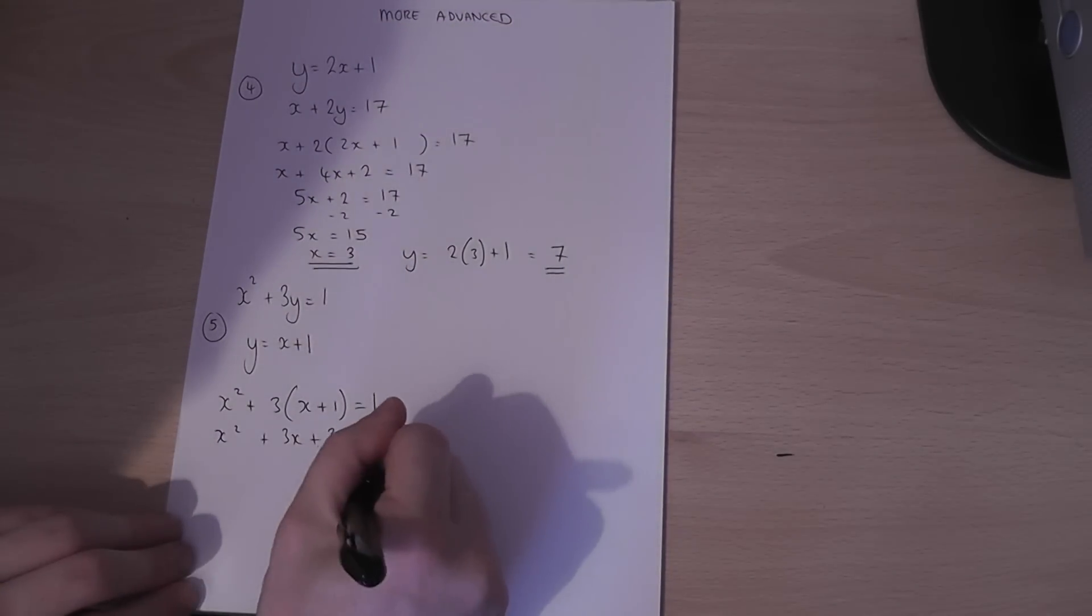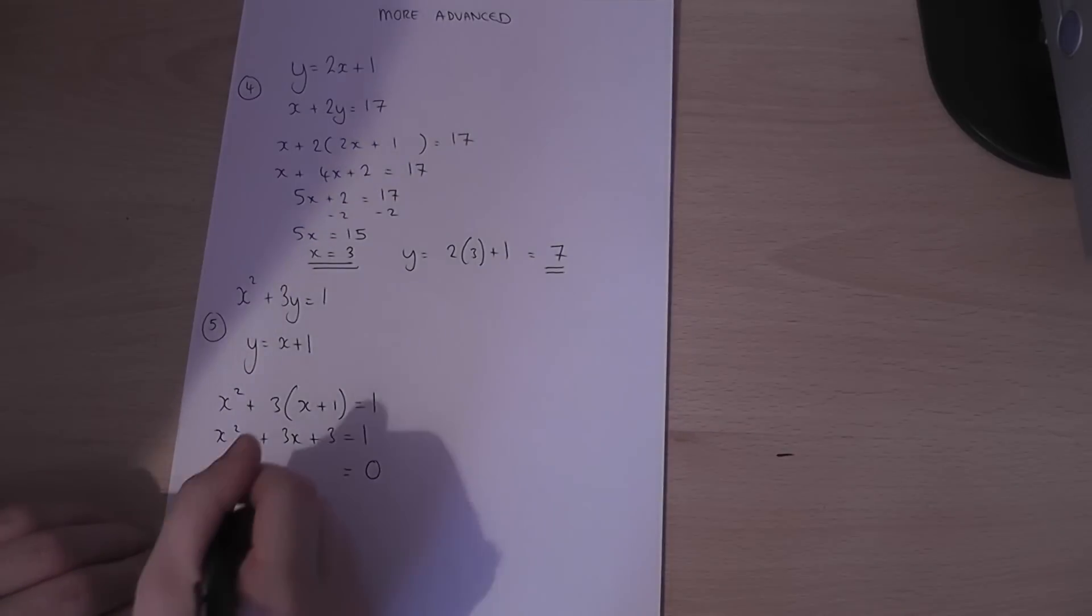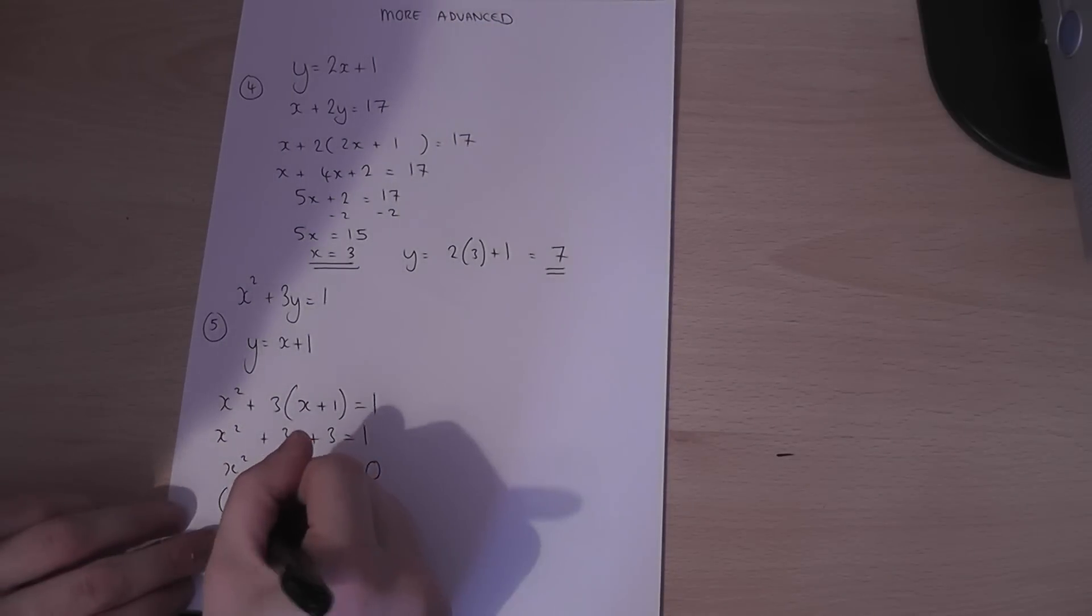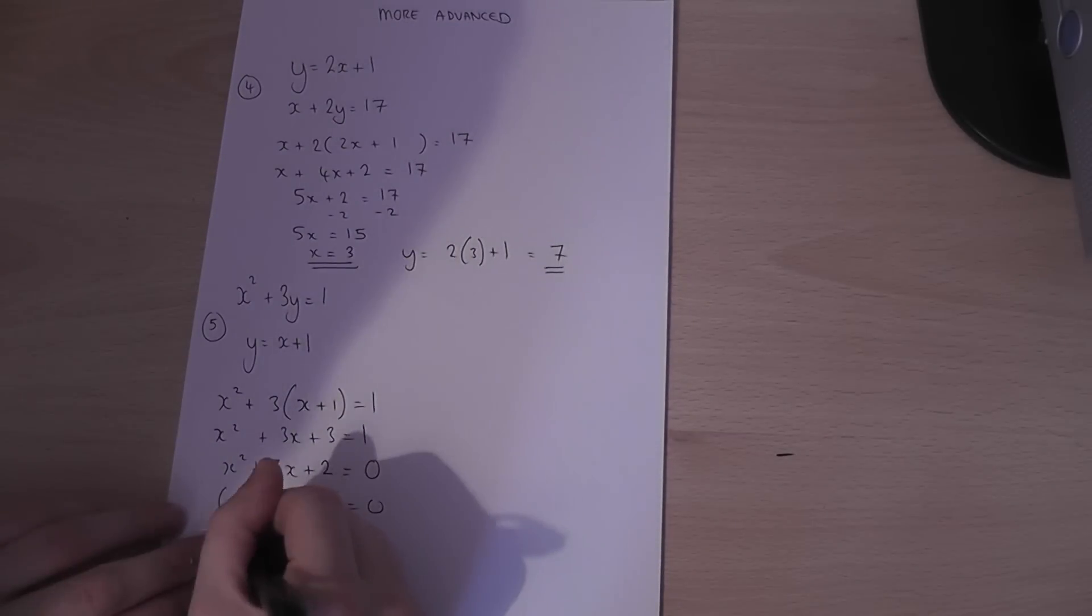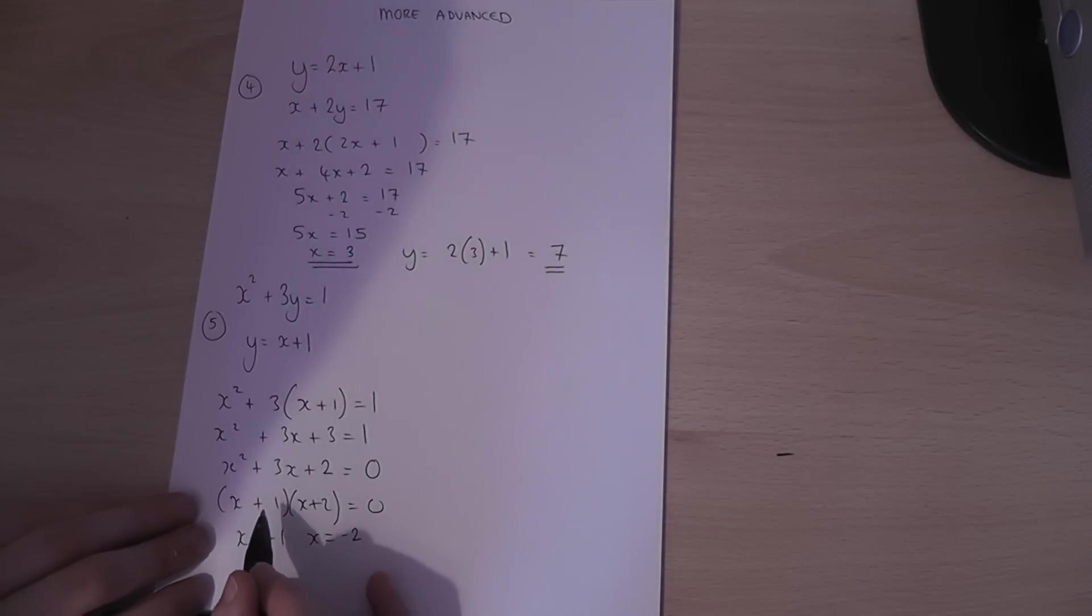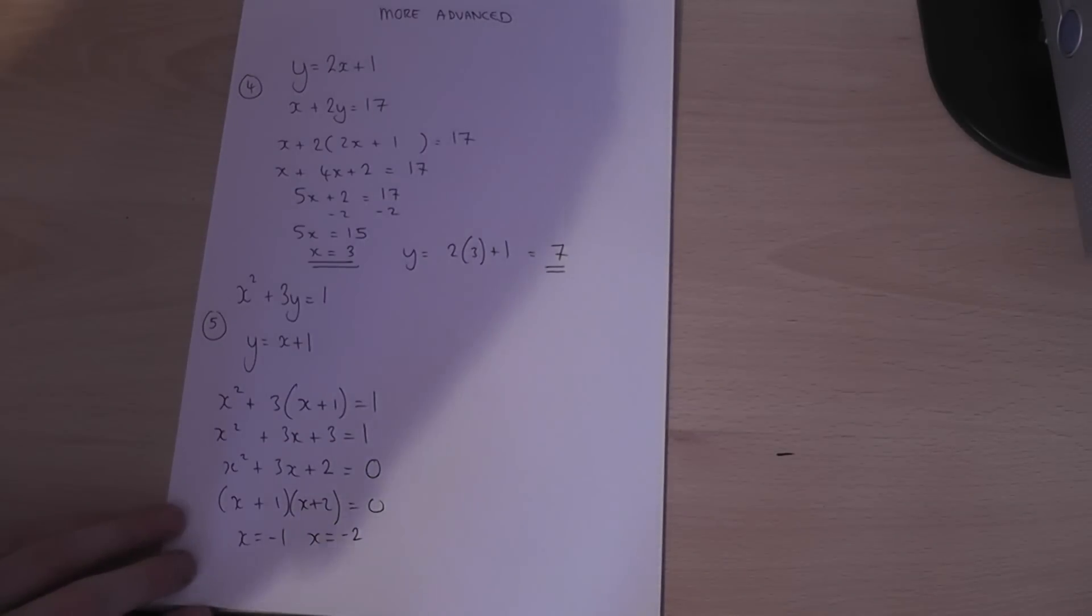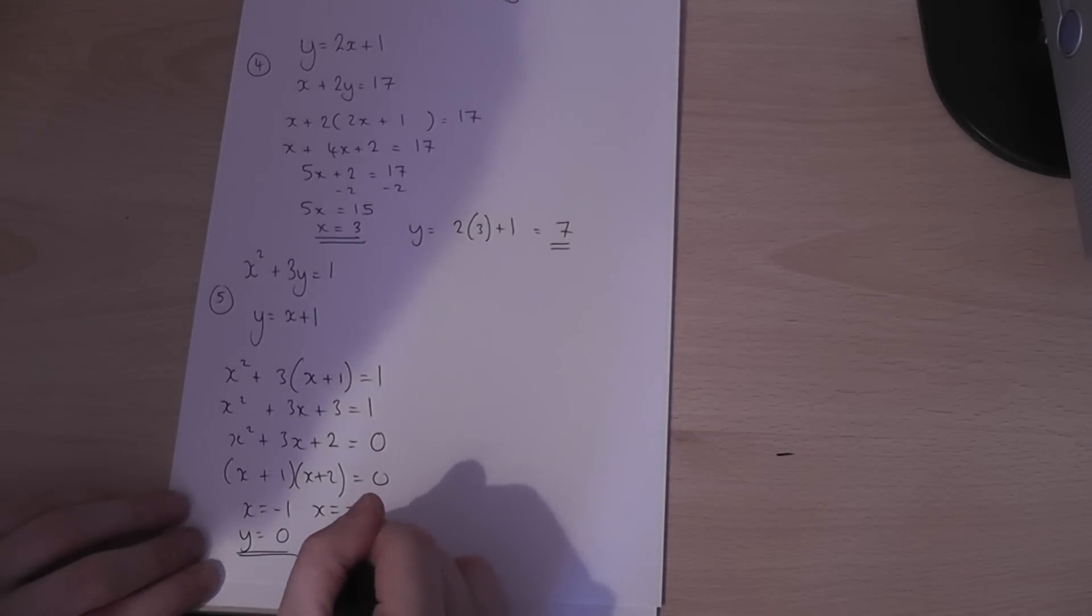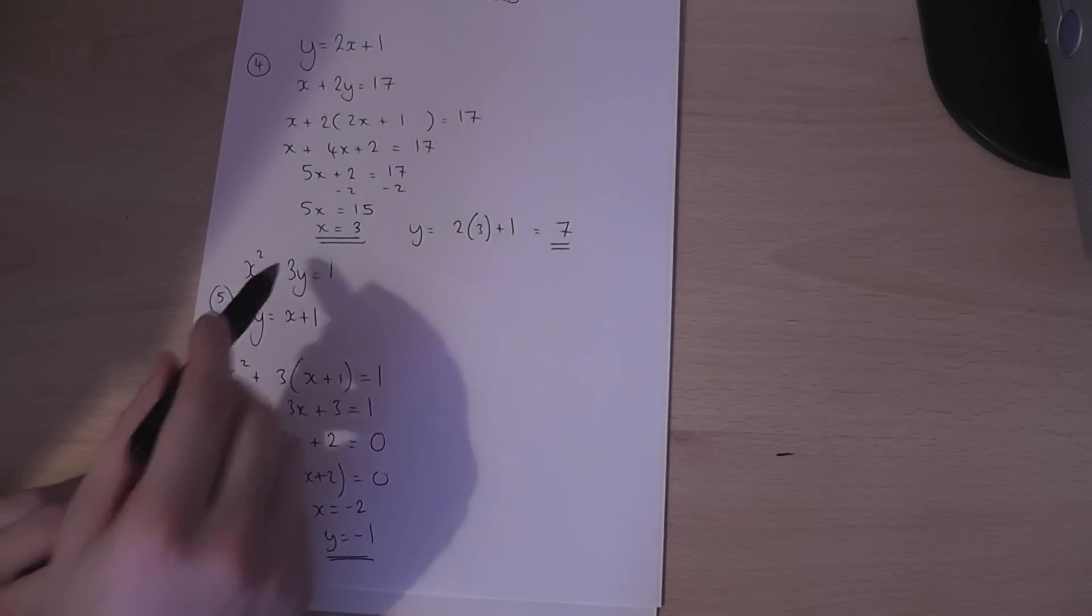And then because it's quadratic I want to make the equation equal to 0. So I subtract 1 from both sides. This equation factorizes. Because 1 times 2 is 2 and 1 plus 2 is 3. Therefore the solutions must be x equals minus 1 and x equals minus 2. Because if you factorize the solutions, the solutions are the numbers in the bracket with the sign change. Because minus 1 plus 1 equals 0 and minus 2 plus 2 equals 0. And then to finish off, if y equals x plus 1, so when x is minus 1, y equals minus 1 plus 1, which equals 0. And these are the two pairs of solutions to this pair of simultaneous equations.